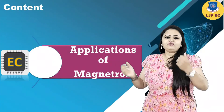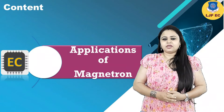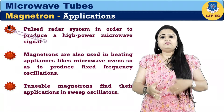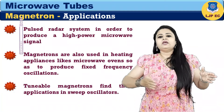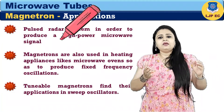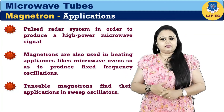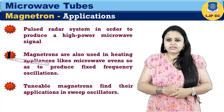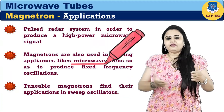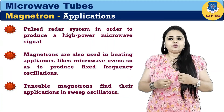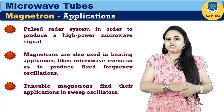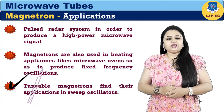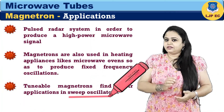Let us see some of the applications of magnetron. The major application is in pulsed radar systems in order to produce high power microwave signals. Magnetrons are also used in heating appliances like microwave ovens to produce fixed frequency oscillations. Tunable magnetrons find their application in sweep oscillators.